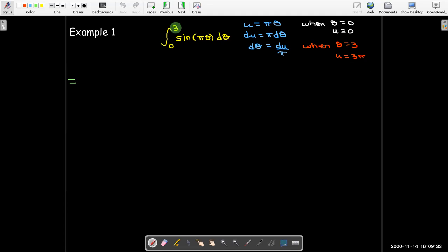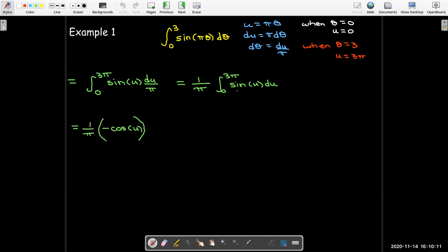So now let's write the new integral in terms of u. Everything should be in terms of u. So I have my new bounds going from 0 to 3 pi. I've replaced pi theta with just u. And I'll replace d theta with du over pi. So I'll just factor the 1 over pi out in front of the integral. And find the antiderivative of sine of u. That's negative cosine of u. Note that I still have the multiplying factor 1 over pi.